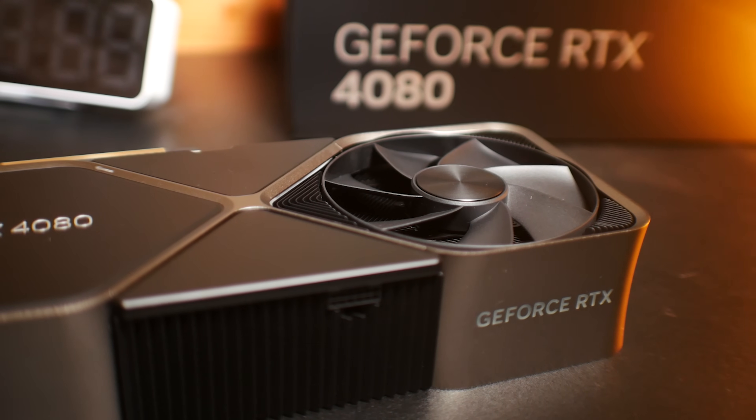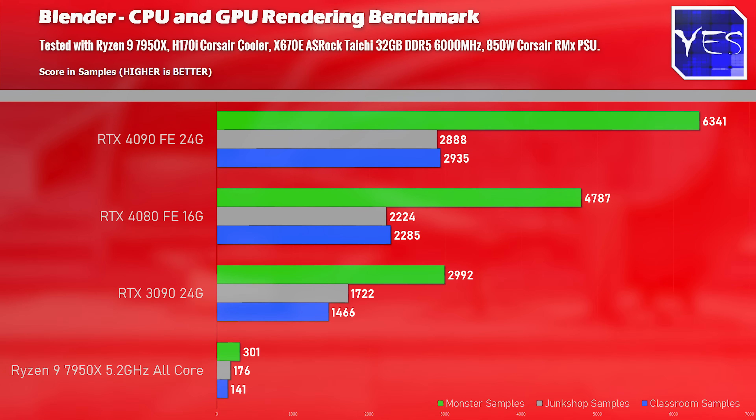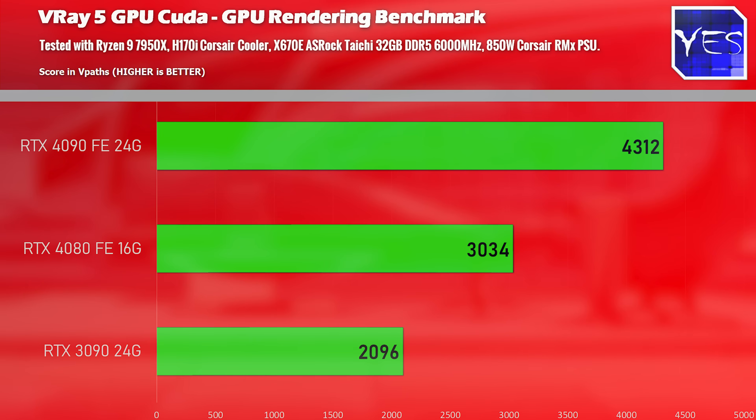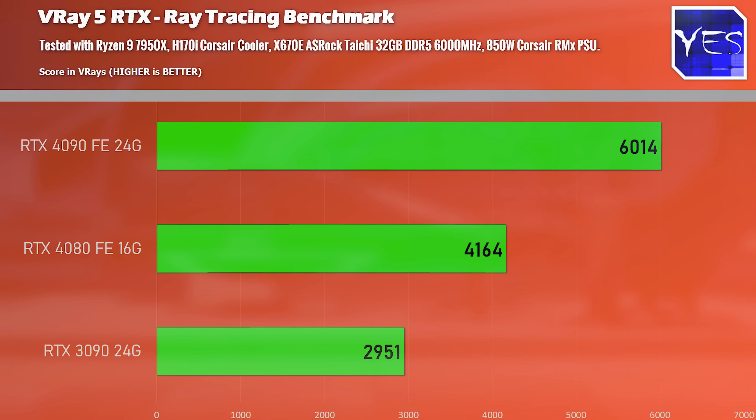I'm actually looking at potentially fitting the RTX 3080 Ti cooler onto this 4080 for my mini-ITX rig. Segueing into productivity, in Blender the 4080's numbers are much higher than the RTX 3090 but trail the 4090 by quite a bit. The V-Ray CUDA and ray tracing benchmarks show performance sitting between the RTX 3090 and the RTX 4090, and a two-slot, shorter solution would make the 4080 a much better fit for productivity builds.